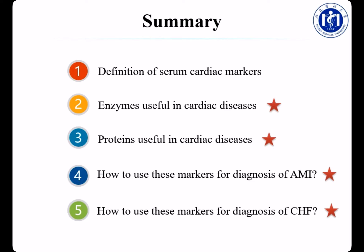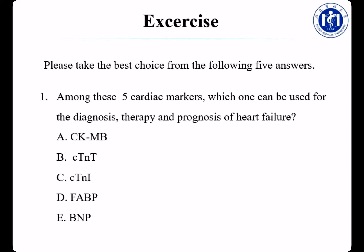Let's make the final summary for today's lesson. We have learned the definition of serial cardiac markers: they are enzymes and proteins that leak into the blood, and their levels indicate myocardial damage. Enzymes include CK, CKMB, LDH, and the LD1/LD2 ratio. Proteins include troponin T, troponin I, myoglobin, FABP, BNP, and NT-proBNP. For early diagnosis of AMI, choose myoglobin and FABP. For definitive diagnosis, choose troponin T, troponin I, and CKMB. For late diagnosis, choose troponin T, troponin I, and LDH. For diagnosis of CHF, choose BNP and NT-proBNP.